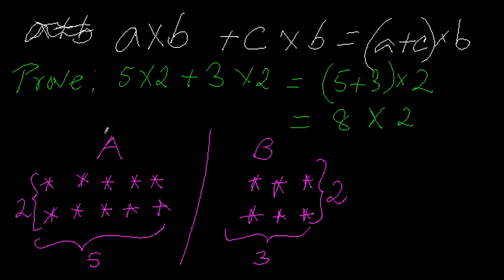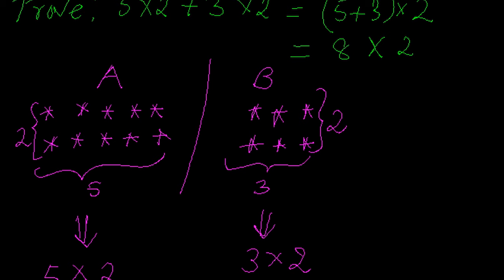Let's take set A where I have five stars in two rows. So I have marked here two rows and five stars, five columns in set A. And I have another set B where I have three stars, that means three columns in two rows, which I have shown this way.